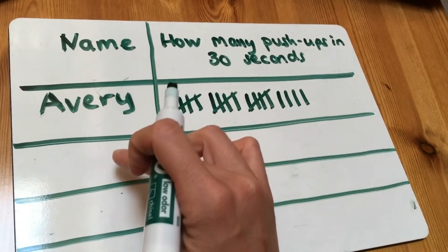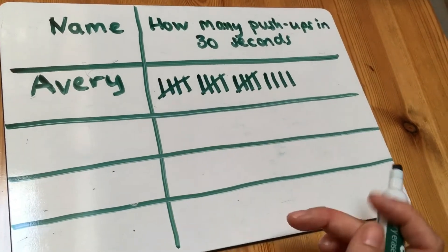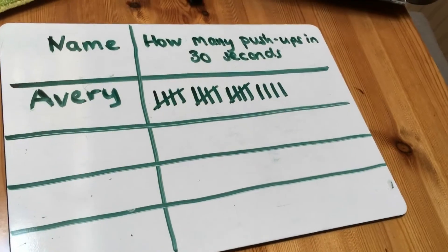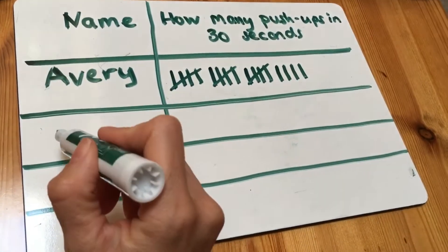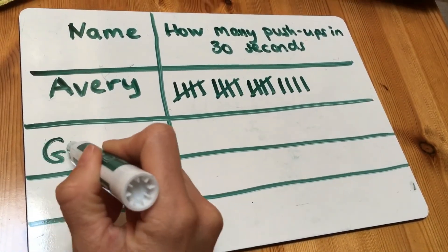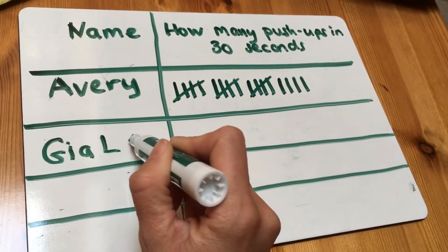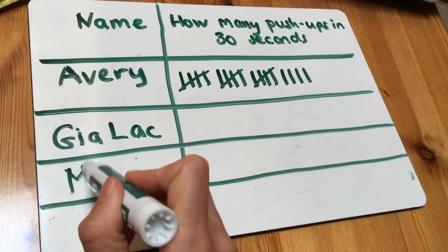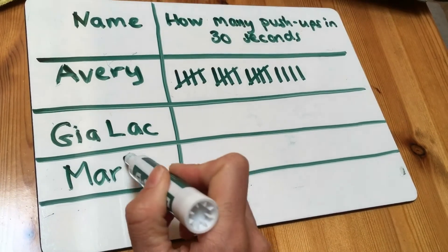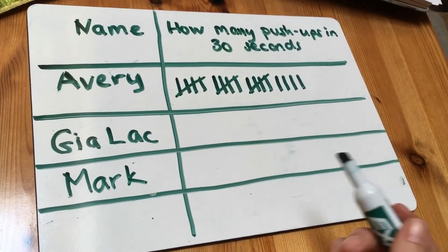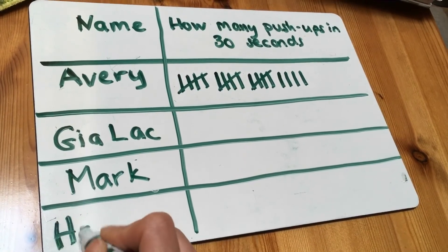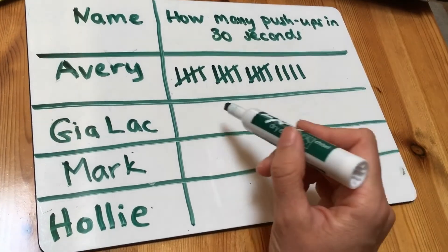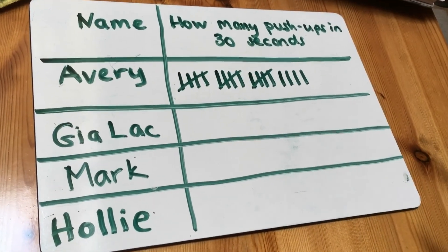So now what you'll do is you will write the names of the different members of your family and see how many push-ups they can do in 30 seconds. But I'm here on my own, so maybe I might want to talk to Zach and see how many push-ups she can do, send a message to Mark, send an email to Holly, and then record the information on my tally chart.